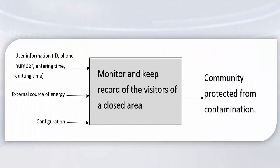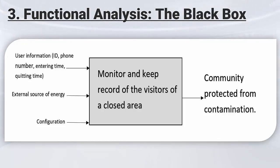The third bullet point is functional analysis. One of its main components is the black box, which represents two main parts: the functional roles and the IOs. In the project, the functional role is to monitor and keep record of visitors in closed areas. As input, we need an ID tag with user information, an external source of energy, and the configuration that includes the code and implementation. As output, we get a protected community from pandemics and non-crowded areas.